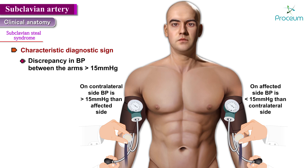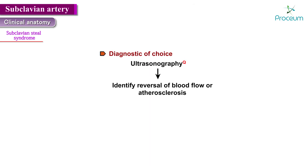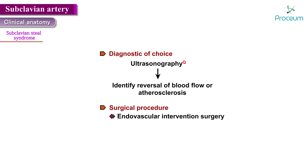The blood pressure on the contralateral side is higher than the affected side, with a discrepancy greater than 15 mmHg — the diagnostic sign to identify subclavian steal syndrome. The imaging modality of choice is ultrasonography, as it can identify reversal of blood flow or atherosclerosis to confirm the diagnosis. Endovascular intervention or surgery is used to treat symptomatic subclavian steal syndrome cases.